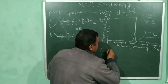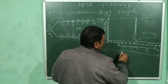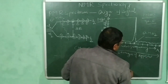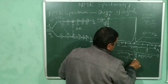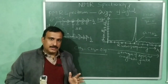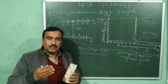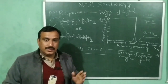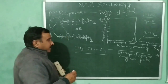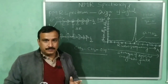But this is not the case. We do not obtain a single signal for all six protons. Instead, we obtain three signals in the NMR spectrum of ethanol. Let us explain why this happens. The electronic environment of all the protons in ethanol is not the same.